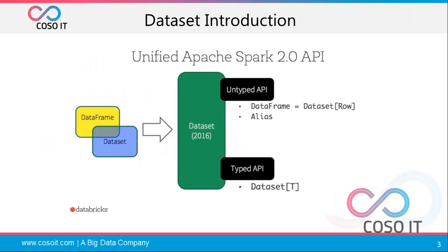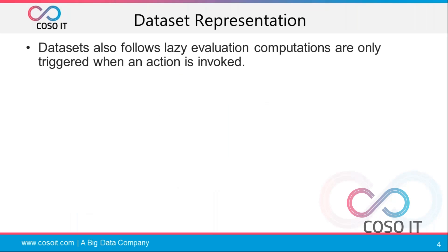DataFrame is a Dataset of a row. You are giving an alias to a particular row, which is a Dataset. DataFrame was an untyped API, but Dataset is a typed API — you have type information now. Dataset follows lazy evaluation: it saves whatever transformation you perform in a Scala object (if programming in Scala) or a Java object (if programming in Java). Whenever you call an action statement, it will trigger and compile that program.